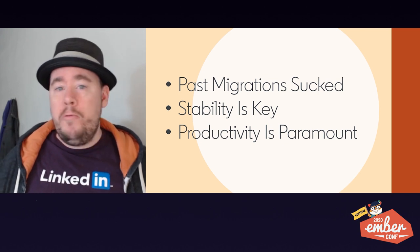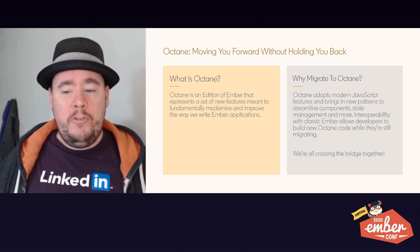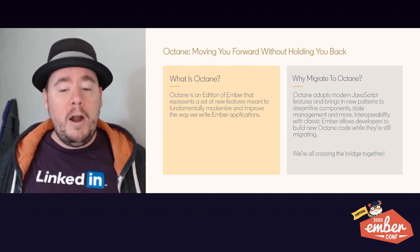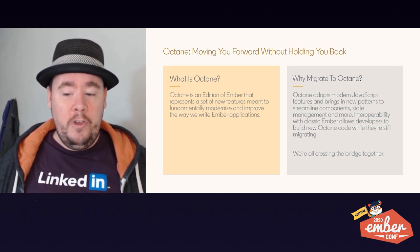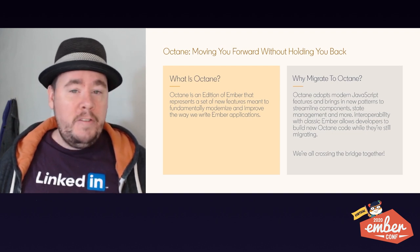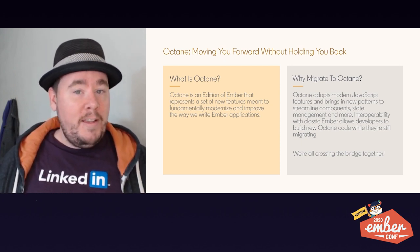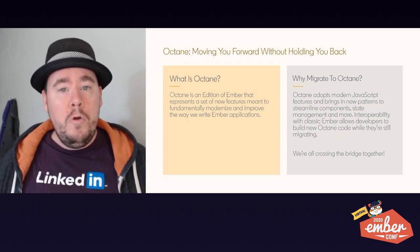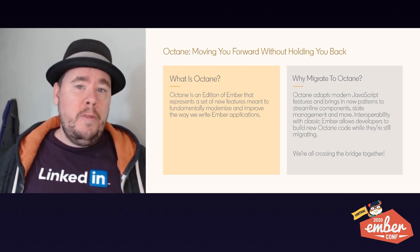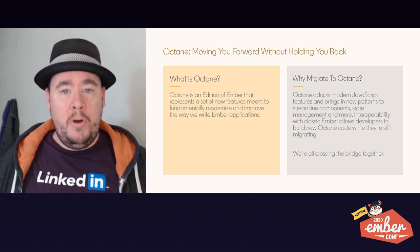For those of you who don't yet know about Octane, I'm going to give you a little bit of background. Octane is an edition of Ember that represents a set of new features meant to fundamentally modernize and improve the way that we write Ember applications. It adopts a lot of modern JavaScript features and brings in new patterns that streamline components, state management, and a lot of the other ways that we think about our Ember applications. In addition, Octane is interoperable with classic Ember patterns, so you can continue building new features in Octane while you're migrating off of your old classic Ember code. It's important that as a community, we cross this bridge together so that everyone has the opportunity to adopt the features they want.